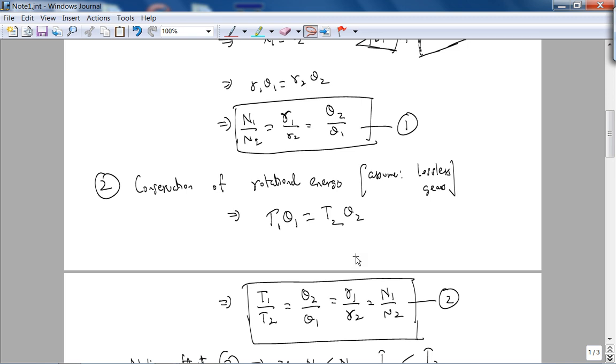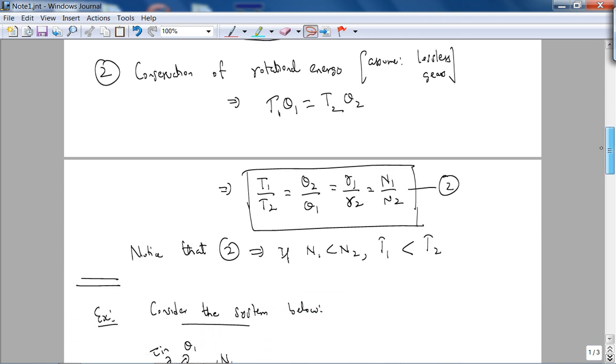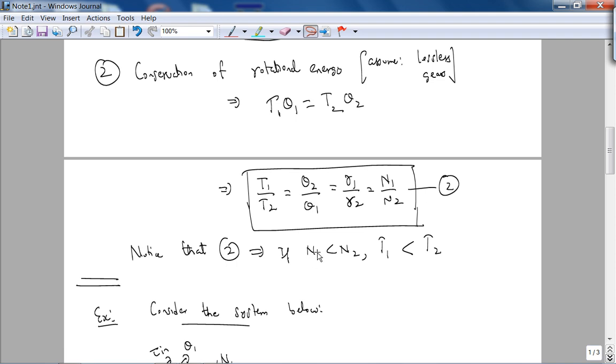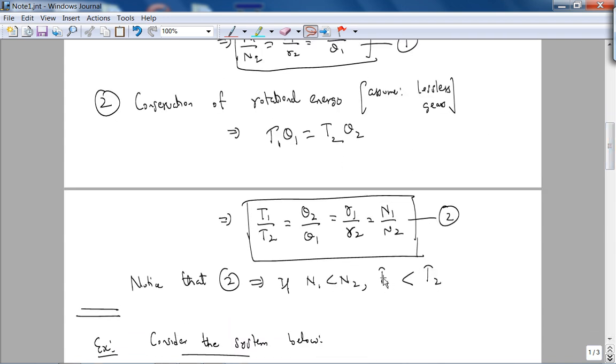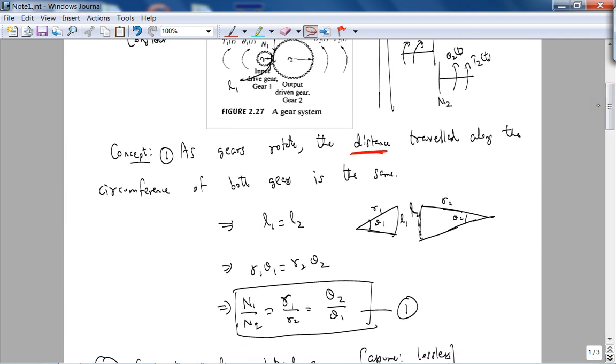Note that if N1 is smaller than N2—assuming τ2 is the output shaft, the larger gear—then obviously the output torque is greater than the input torque. As we discuss this, you should go back to physical gears you've played with when you were younger, with Legos or gear systems in cars, and visualize what's going on.